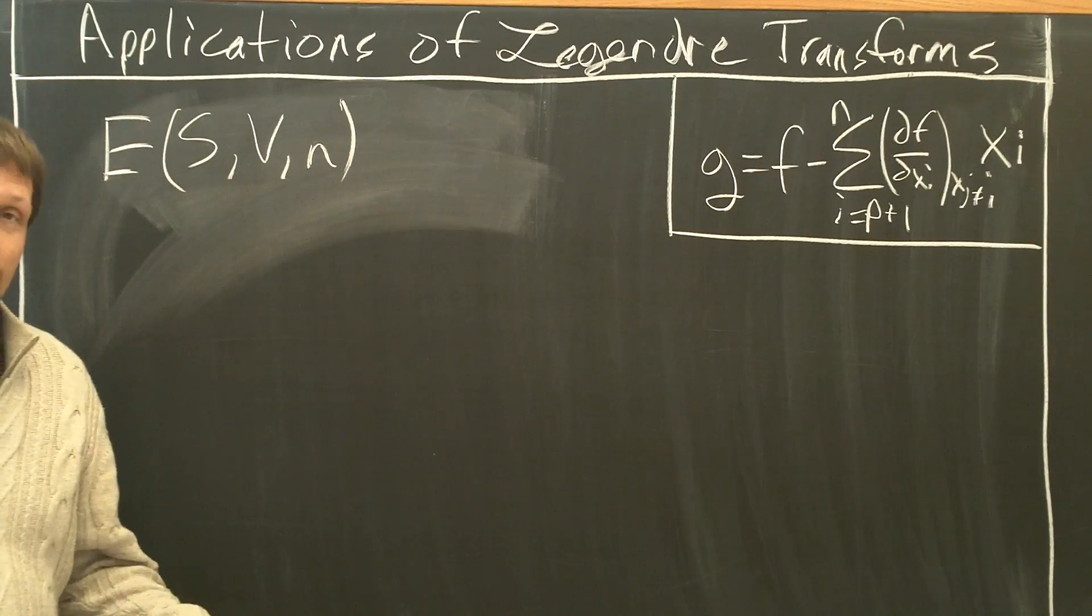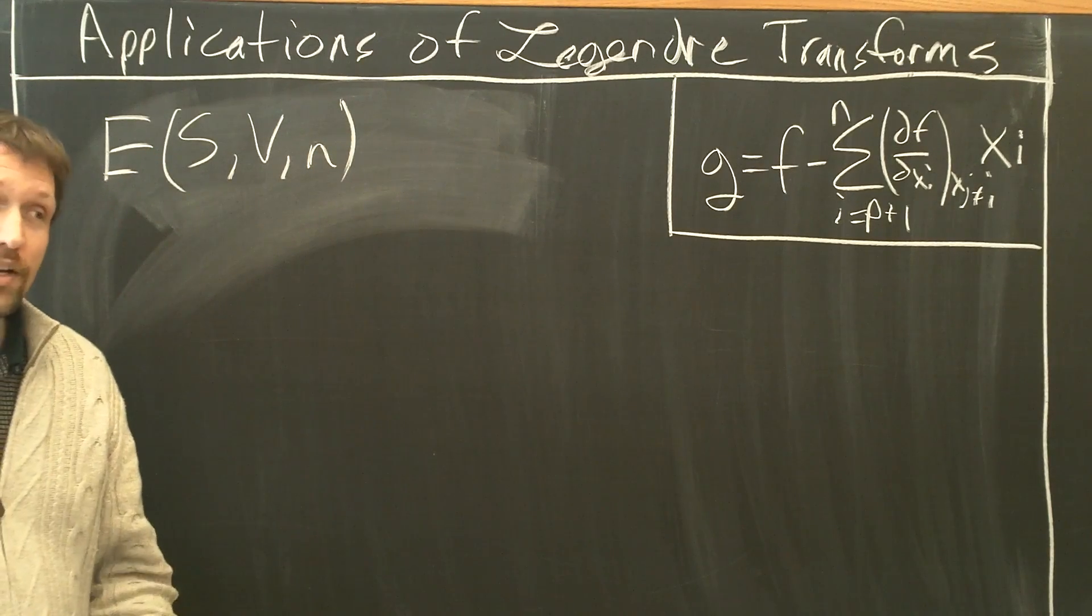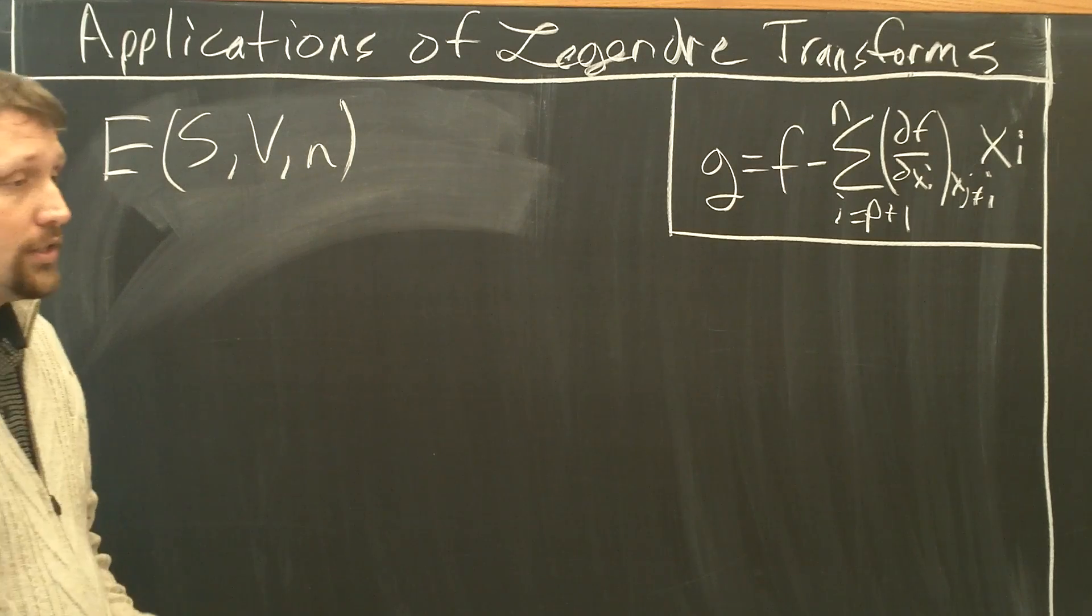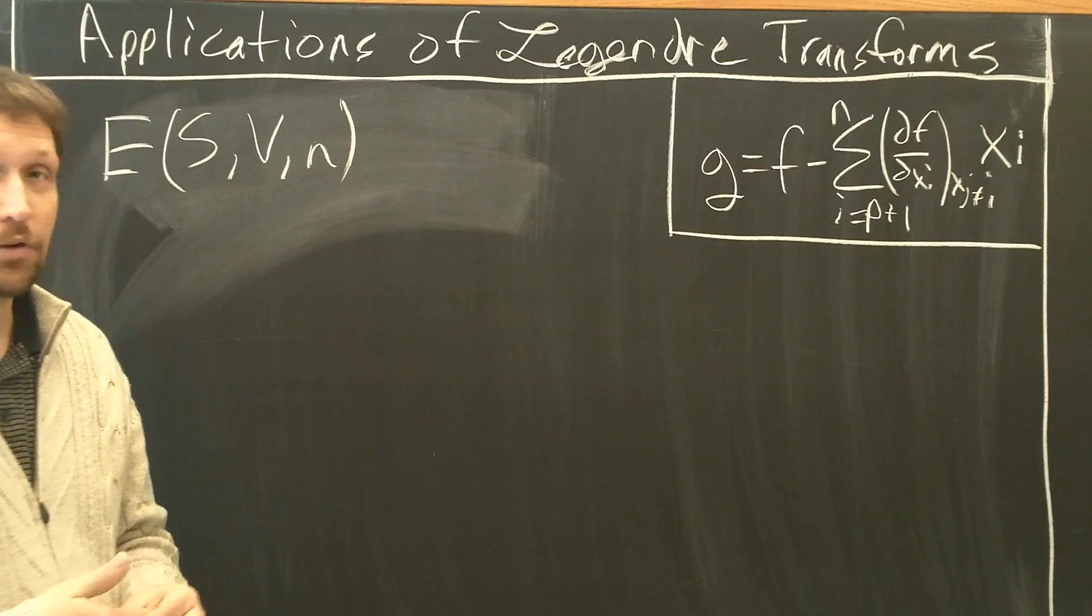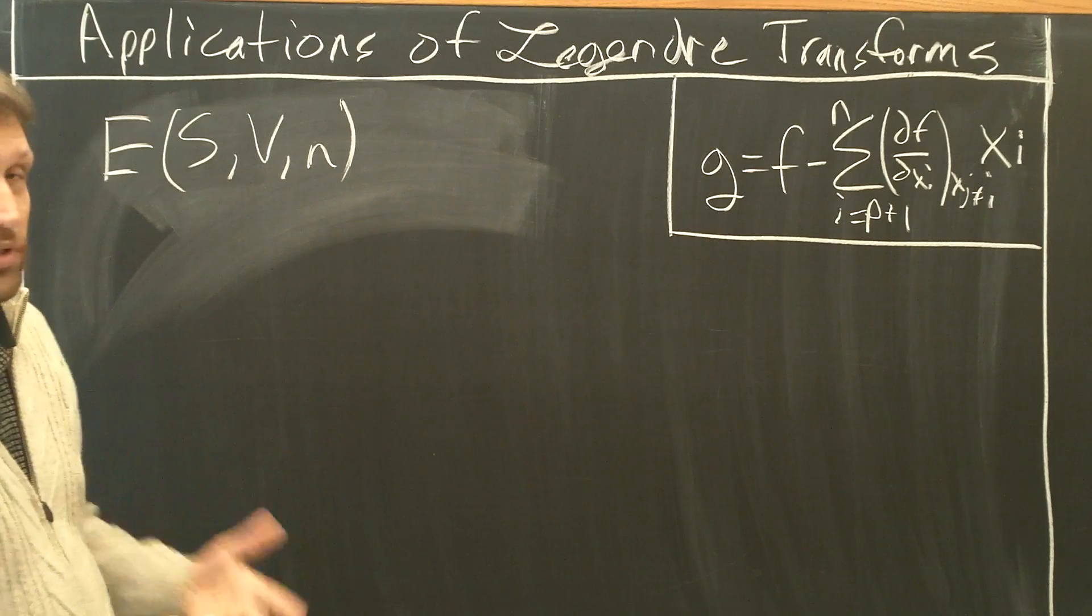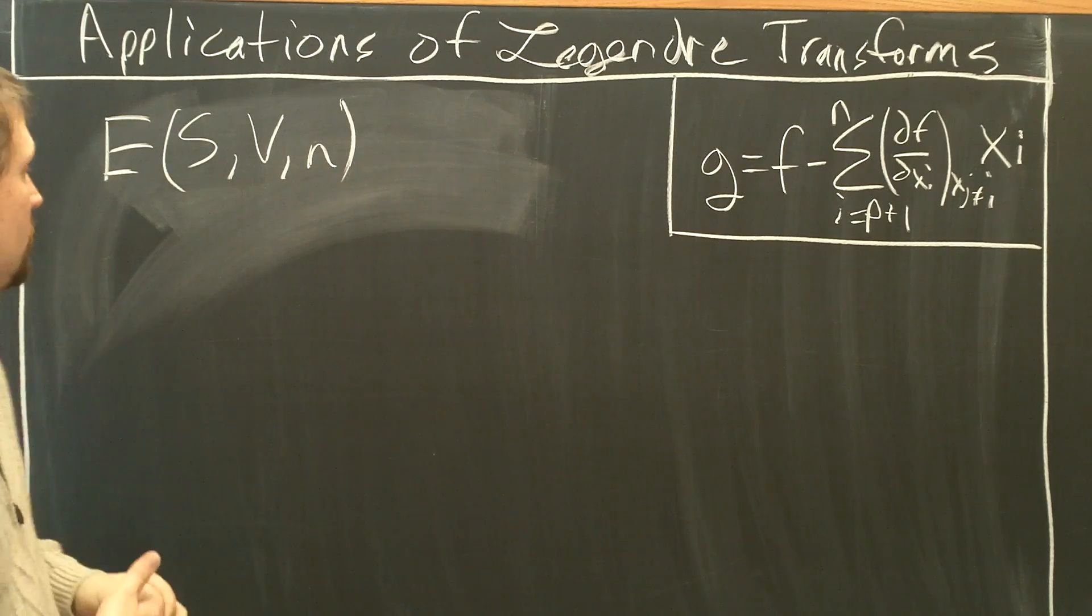We want to convert this into a new state function. Suppose we took the Legendre Transform of E with respect to one of these variables. Let's just choose S for the first one.